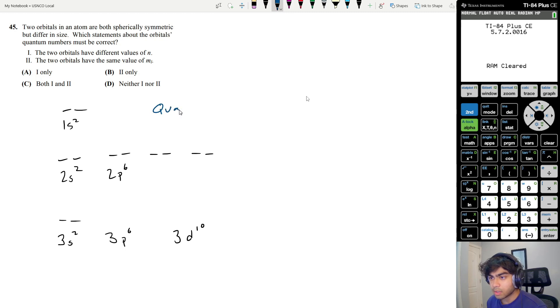Quantum numbers describe the address of an electron. We want to find the quantum number of this exact electron. Quantum numbers have four different numbers: you have n, you have l, you have ml, and you have ms.